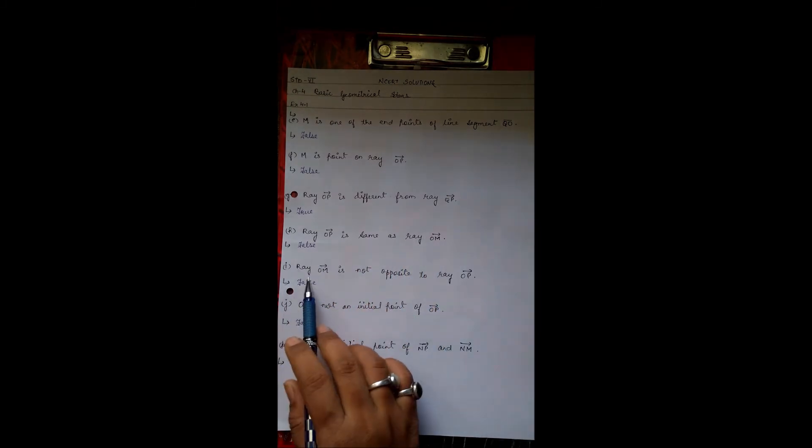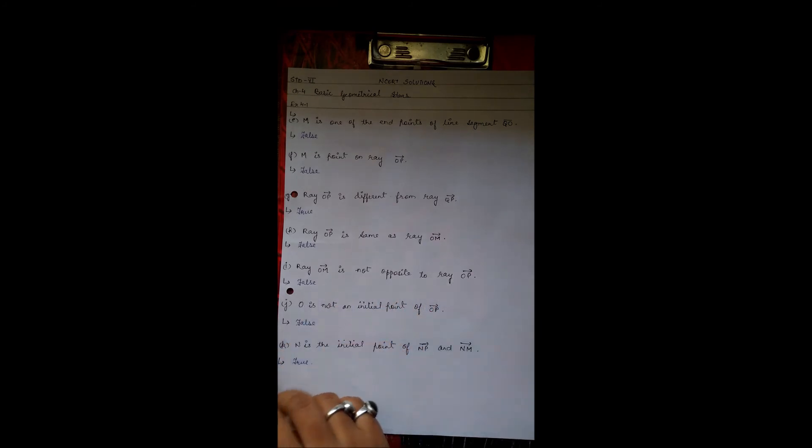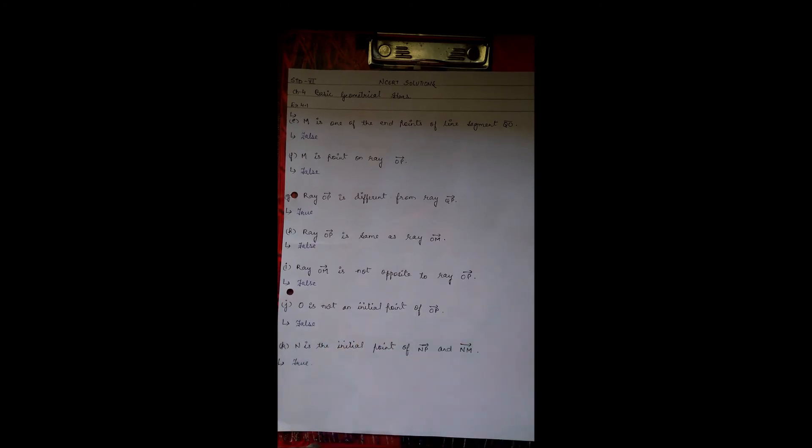Ray OP is same as ray OM. False. Ray OM is not opposite to ray OP. False. O is not an initial point of ray OP. False. N is the initial point of ray NP and ray NM. True.